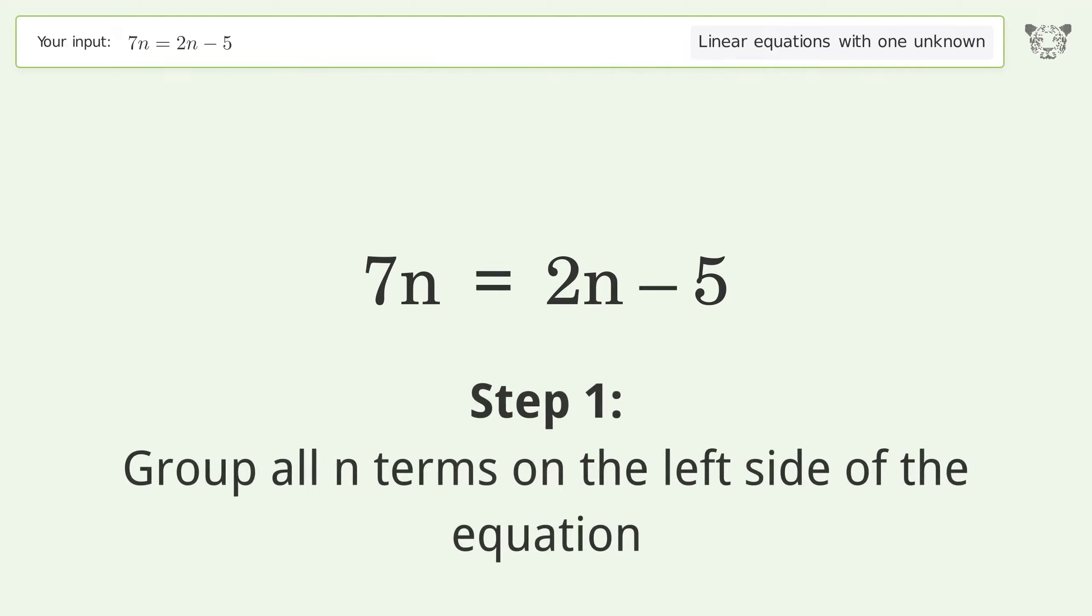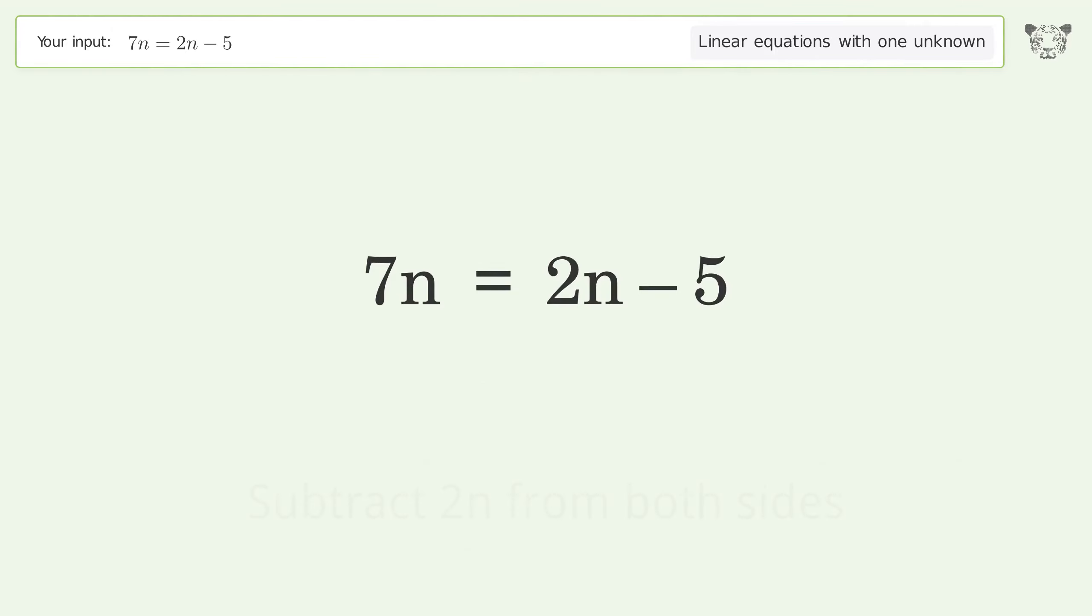Group all n terms on the left side of the equation. Subtract 2n from both sides. Simplify the arithmetic.